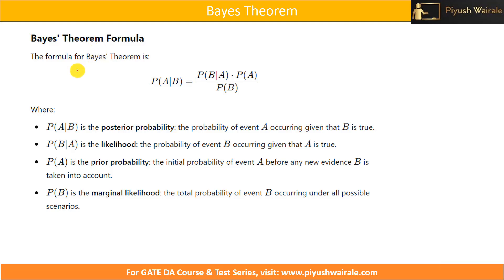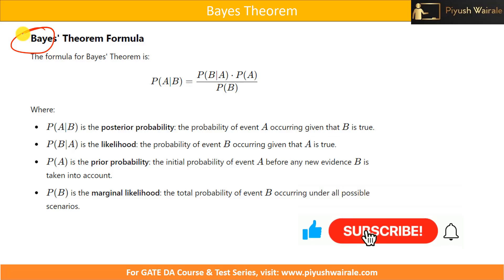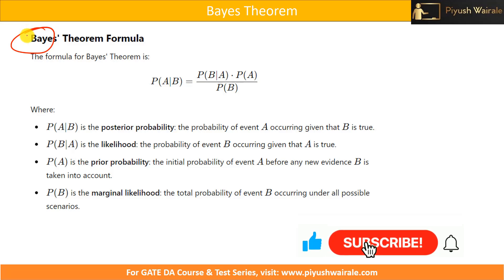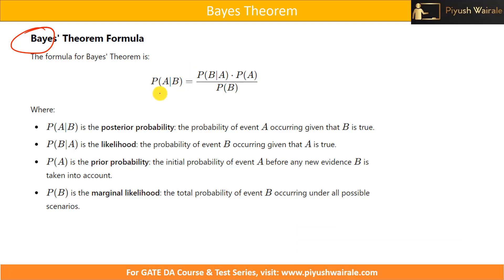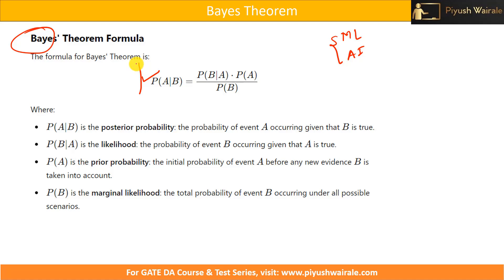Hello everyone. In the previous video we discussed Bayes theorem and a few examples based on it. Now let's discuss Bayes theorem again, but with different terminologies — we are assigning a name to each probability. These terminologies are very important when discussing ML and AI concepts. So Bayes theorem states: the probability of A given B is equal to the probability of B given A, into probability of A, divided by probability of B.